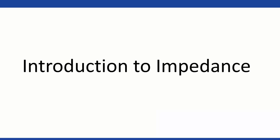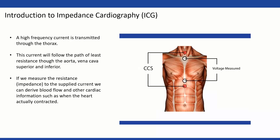Introduction to impedance. What we're doing is transmitting a high-frequency current from the back sensors — shown here in red. That current transfers through the thorax of the person and follows a path of least resistance, which, due to the blood, is mostly found in the aorta, vena cava — superior and inferior — all in the heart. The two front sensors then receive that current. Depending on whether there's blood or not, we know the resistance of that current, which is how we track blood flow — when the left aortic valve opens and when blood is ejected.